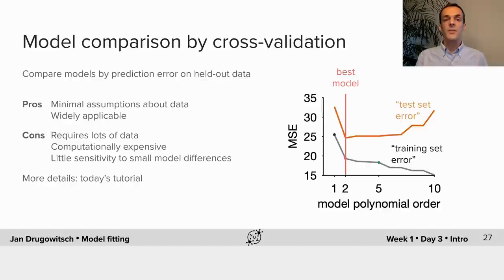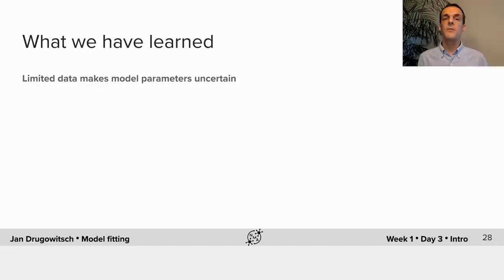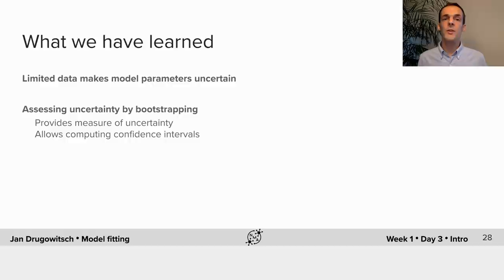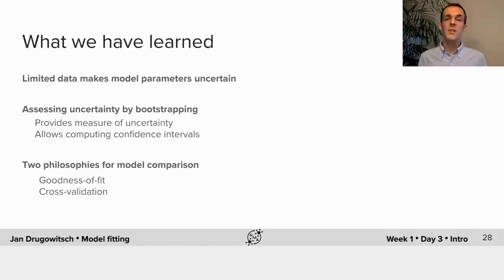So what have we learned in the last part of the introduction? First, because we're fitting models to limited data, model parameters are uncertain. One way to assess this uncertainty is by bootstrapping, which provides a measure of the uncertainty for each parameter value, as well as allowing us to compute confidence intervals and perform statistical tests. Lastly, we've looked at two philosophies for comparing models: the goodness of fit measure and cross-validation. You'll see more examples of all of this in today's tutorial, which I hope you enjoy, and I wish you the best of luck.